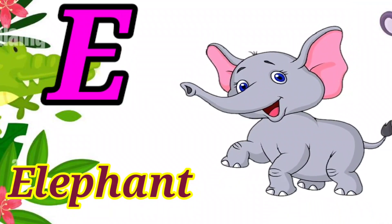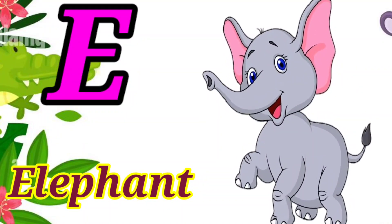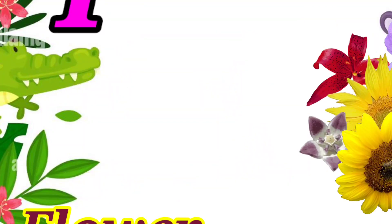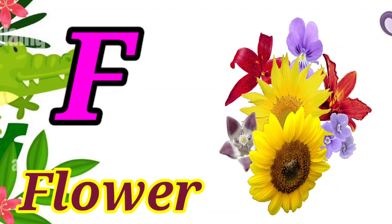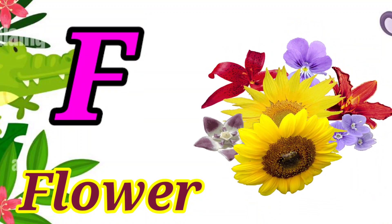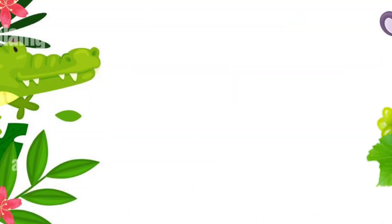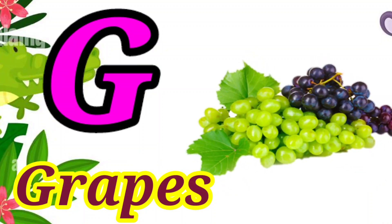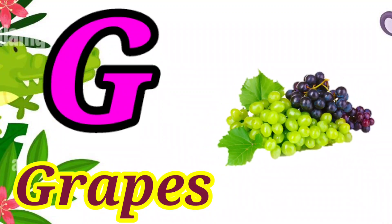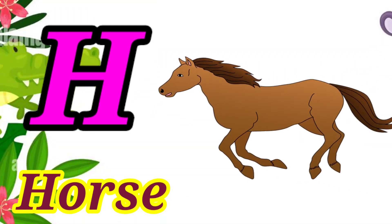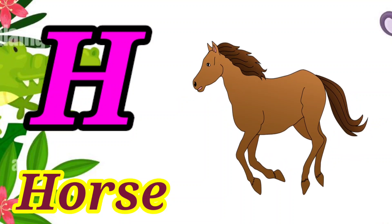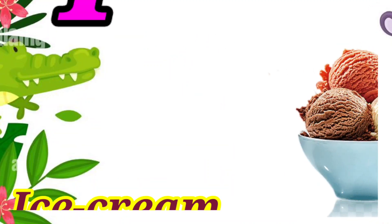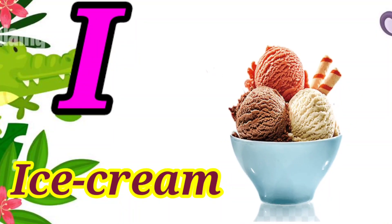E for elephant. F for flower. G for grass. H for horse. I for ice cream.